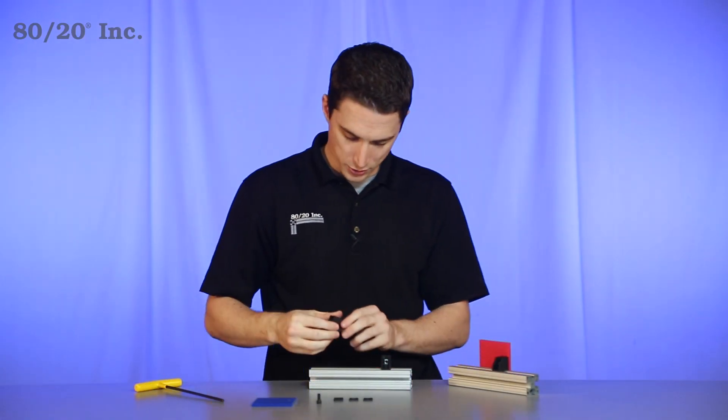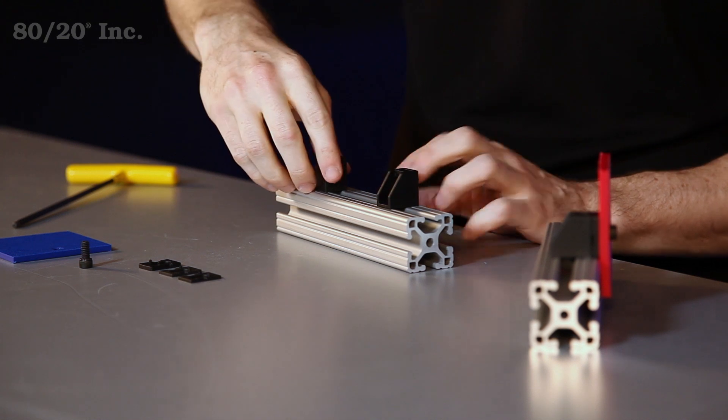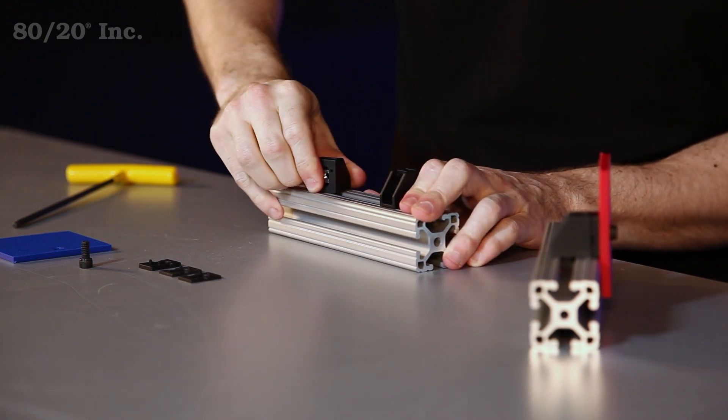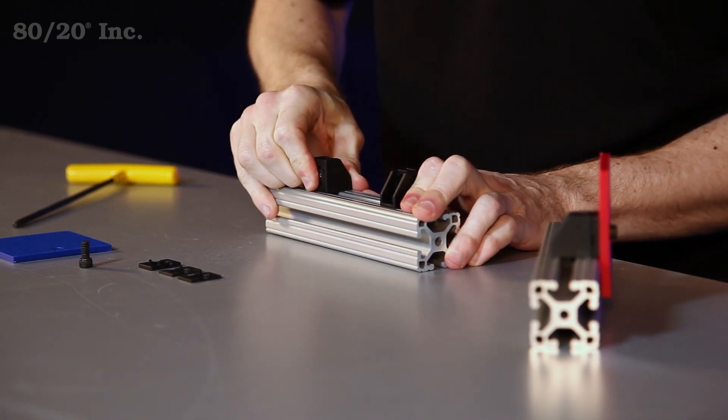Now we'll take the drop-in one. This one simply drops into the open T-slot. Give it a quarter turn clockwise and it locks right into place.